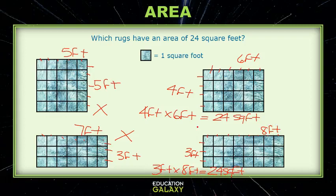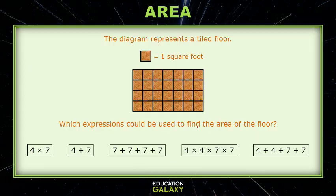Let's try another one. Okay we have a tiled floor here, each little tile is a square foot and we want to know which of these expressions can be used to find the area. Well we've talked about two ways, one is repeated addition. So if I count here one two three four five six seven, I have seven squares across. So if each row is seven I can add seven four times, and we've talked about how that works so this one is okay.